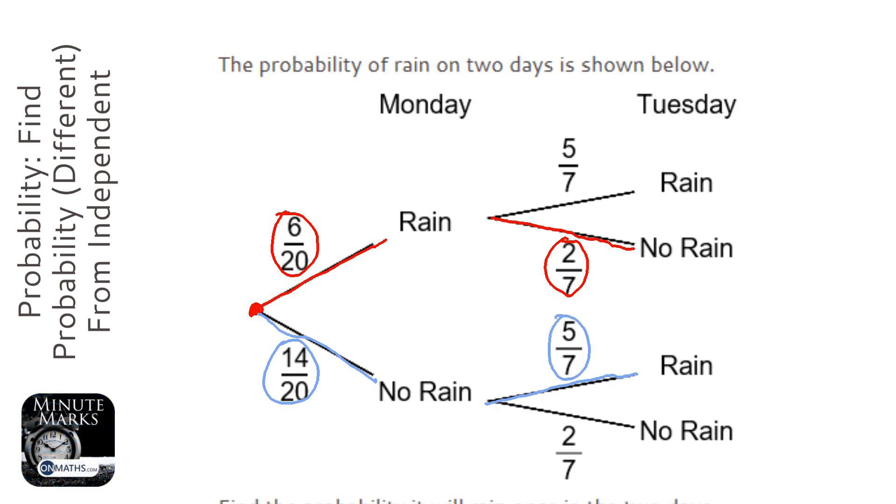We just multiply the two probabilities together, so 6 times 2 is 12, 2 times 7 is 14, so that'd be 12/140. Now I'm not going to cancel that down and you'll see why in a second.